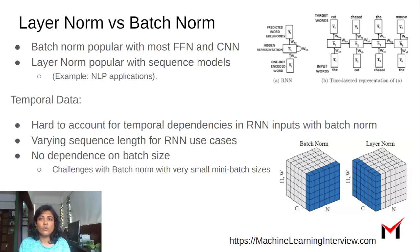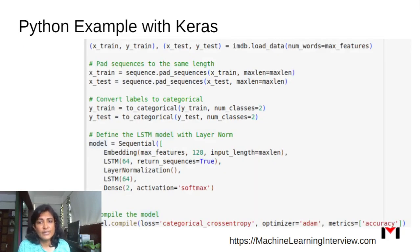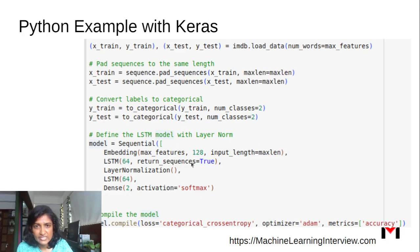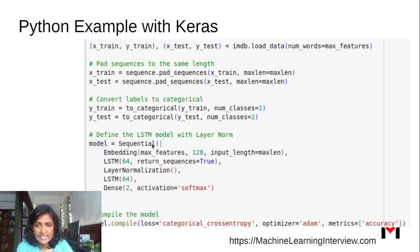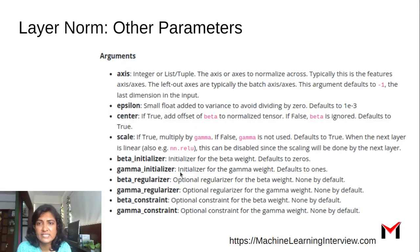We can use layer norm pretty easily in our code. Let's look at a very simple Keras example. When you're trying to build this small LSTM model — it's loaded the IMDB dataset for sentiment — you can add a layer normalization operation like this. Layer normalization has several parameters.